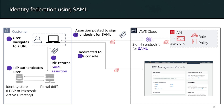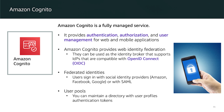Both identity federation using SAML and identity federation with an identity broker can be complex to implement. Amazon Cognito is a fully managed service that provides authentication, authorization, and user management for both web and mobile applications. Amazon Cognito provides web identity federation and can serve as the identity broker, supporting identity providers compatible with OpenID Connect, with federated identities integration for providers like Amazon, Facebook, Google, or any third-party SAML provider.